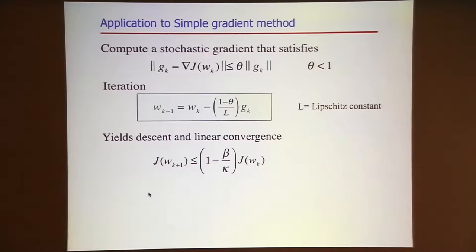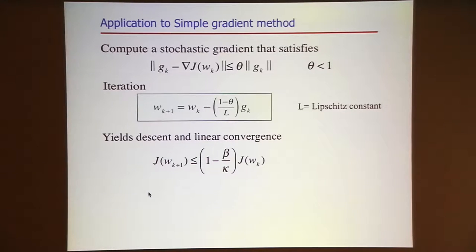Let me hand-wave what we're doing here. I'm computing a stochastic gradient. If the stochastic gradient is not good, I'm going uphill—I'm never going to get to the solution. But suppose there is an oracle who tells you whether the stochastic gradient you computed is good enough with respect to the true gradient to satisfy that condition: that the norm of the stochastic gradient minus the true gradient is less than the norm of the stochastic gradient itself. If it is not true, you increase the sample size until the stochastic gradient satisfies that condition.